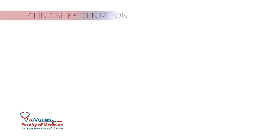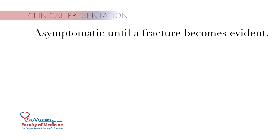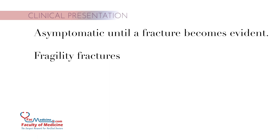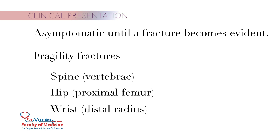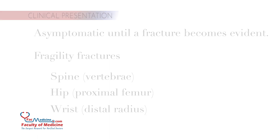Clinical presentation. Osteoporosis is usually asymptomatic until a fracture becomes evident. Osteoporosis-related fractures, also called fragility fractures, most commonly occur in the spine, hip, and wrist.